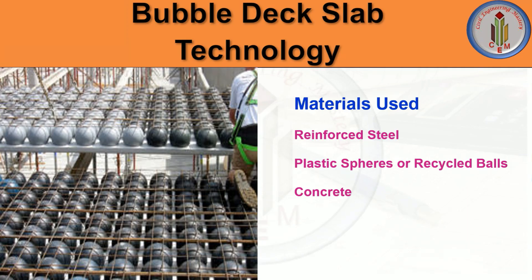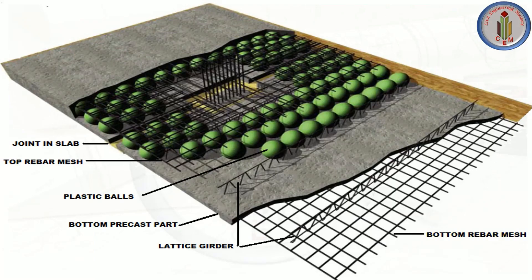The materials used for bubble deck technology are: reinforced steel, plastic spheres or recycled balls, and concrete. Reinforced steel is used in two forms — a mesh layer for lateral support and diagonal lattice girders for supporting the bubbles. The hollow spheres are made from recycled high-density polyethylene (HDPE). Steel of grade Fe 500 or above is used. Concrete is made with ordinary Portland cement with an aggregate size of 3/4 inch, and no plasticizer is required.